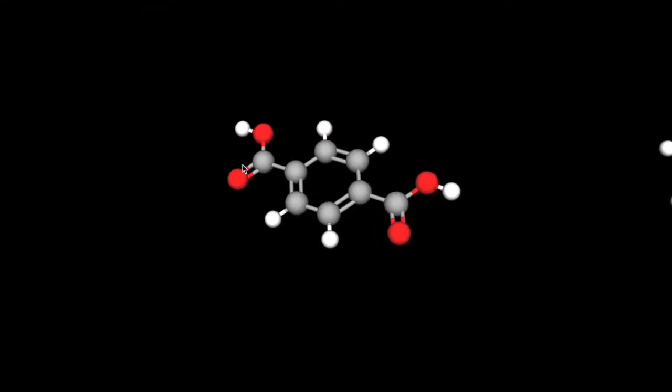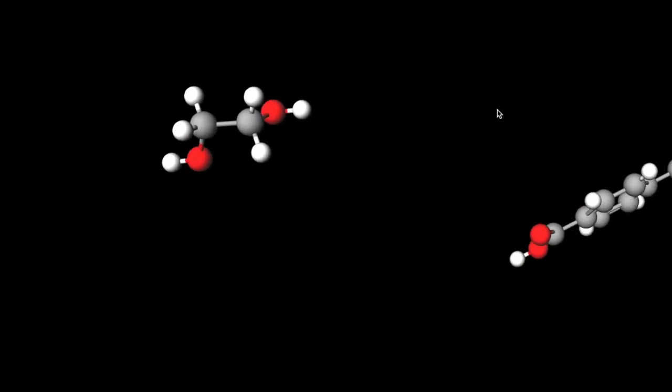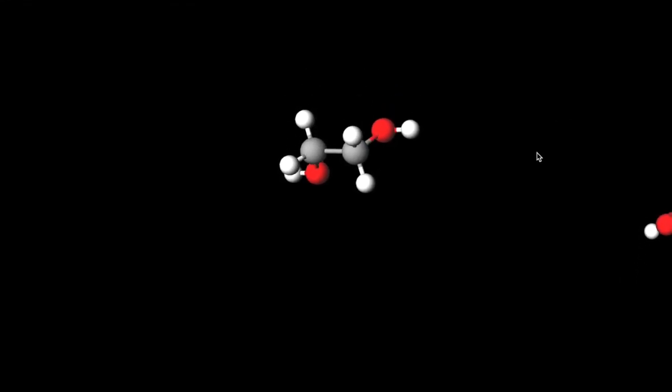Terephthalic acid has a cyclic structure and is on a singular plane whereas ethylene glycol has tetrahedral characteristics.